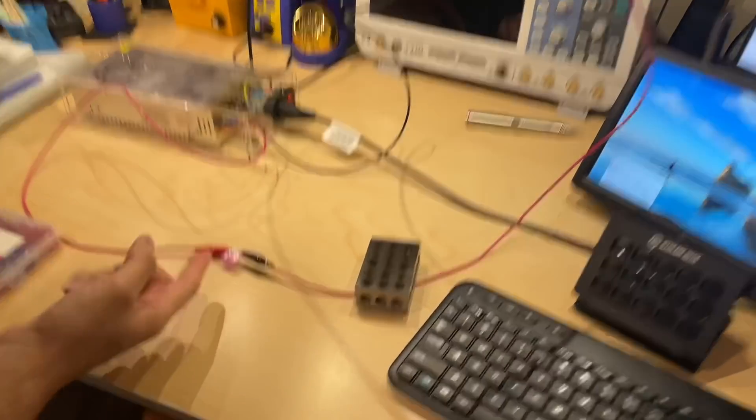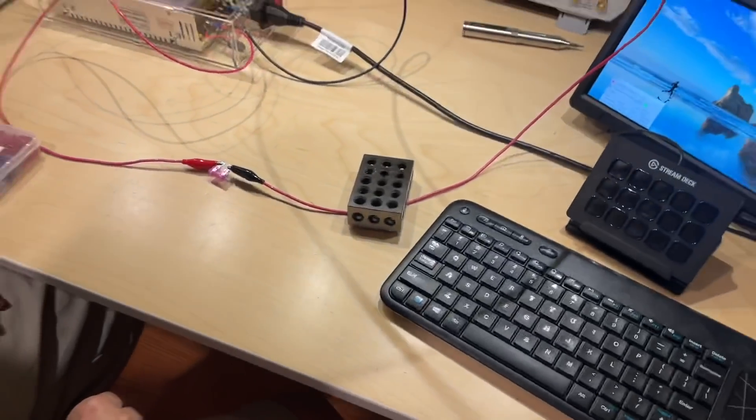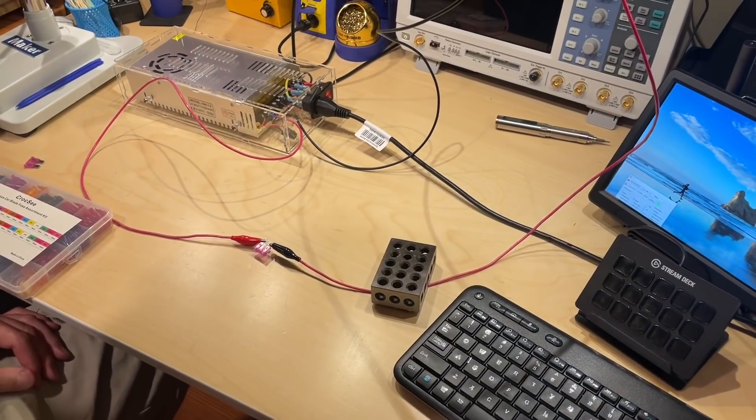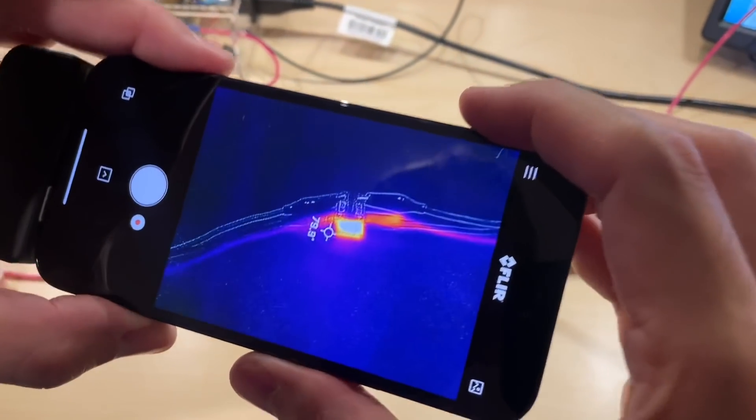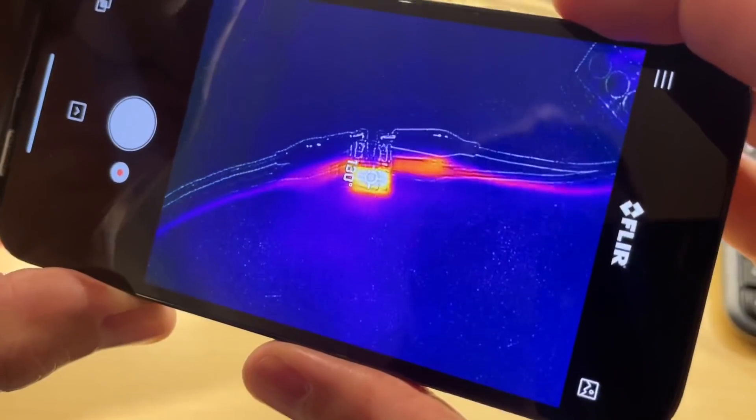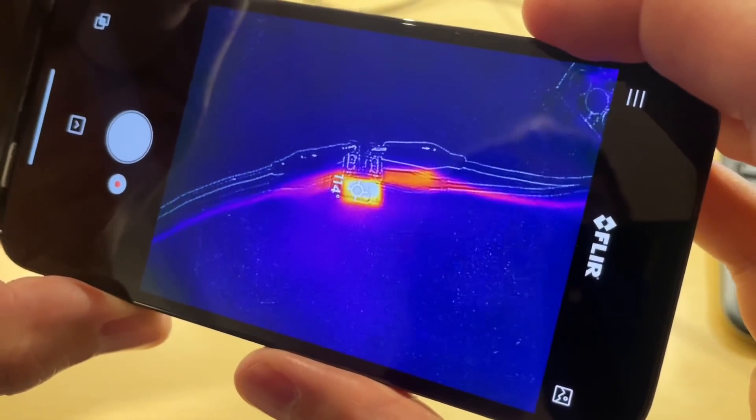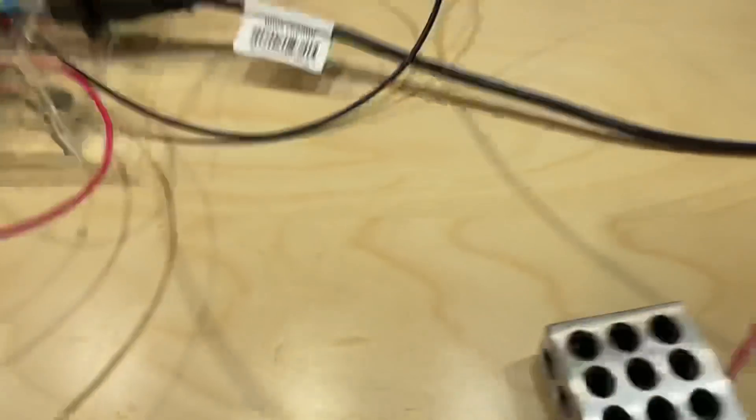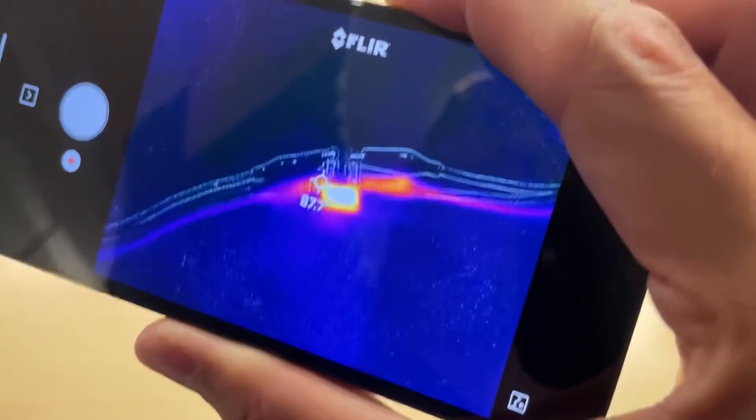Let's take a look with a thermal camera. We have 130 degrees with most of the heat generating from that little filament. That's at 3.8 amps. Keep cranking - 3.9 amps.